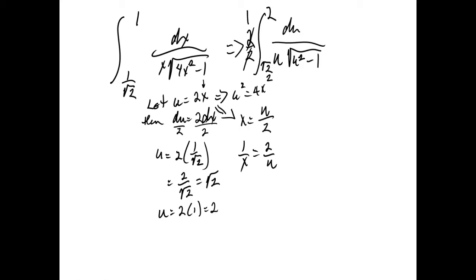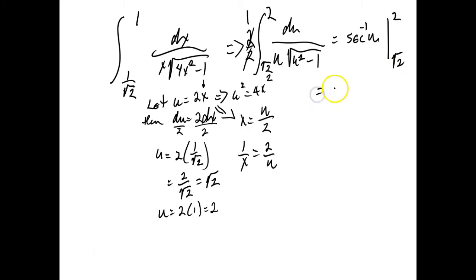Now we're ready to do the integration. This is exactly the form in equation 4 above — everywhere you say x, put a u in its place. So this is going to be inverse secant of u evaluated from √2 to 2. That will be inverse secant of 2 minus inverse secant of √2.